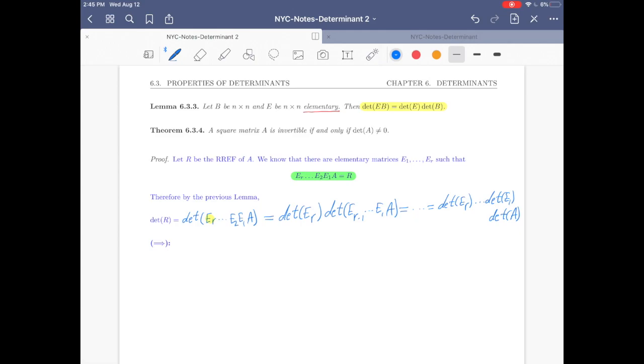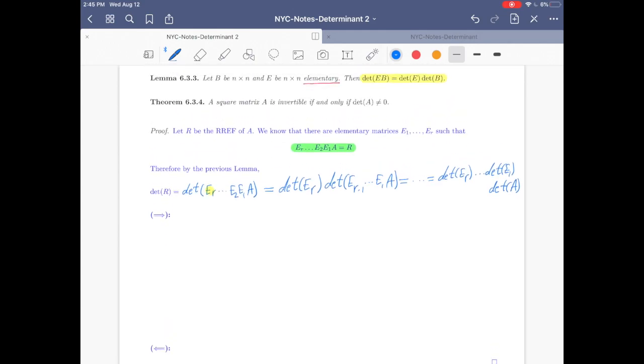Now let's prove both sides of this theorem, because it's if and only if. First, suppose that A is invertible. Then by the fundamental theorem of invertible matrices, we know that R equals I.